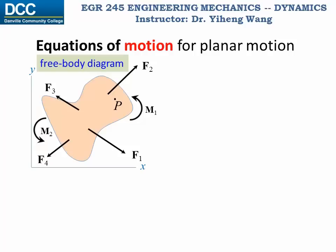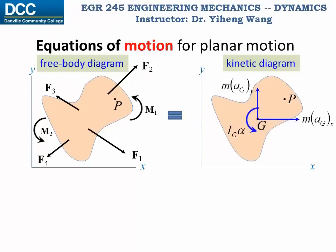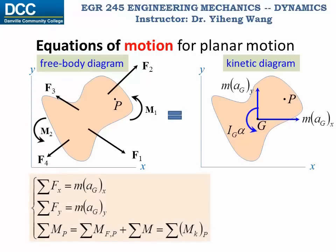For a rigid body with a given free body diagram undergoing general plane motion, we can draw its equivalent kinetic diagram with linear accelerations a_Gx and a_Gy at its gravitational center G, and the angular acceleration alpha for the entire rigid body. We can write a system of three scalar equations in a similar form as the equilibrium equations: resultant force along x equals m times a_Gx, resultant force along y equals m times a_Gy, and resultant moment about any arbitrary point P equals the kinetic moment about point P.